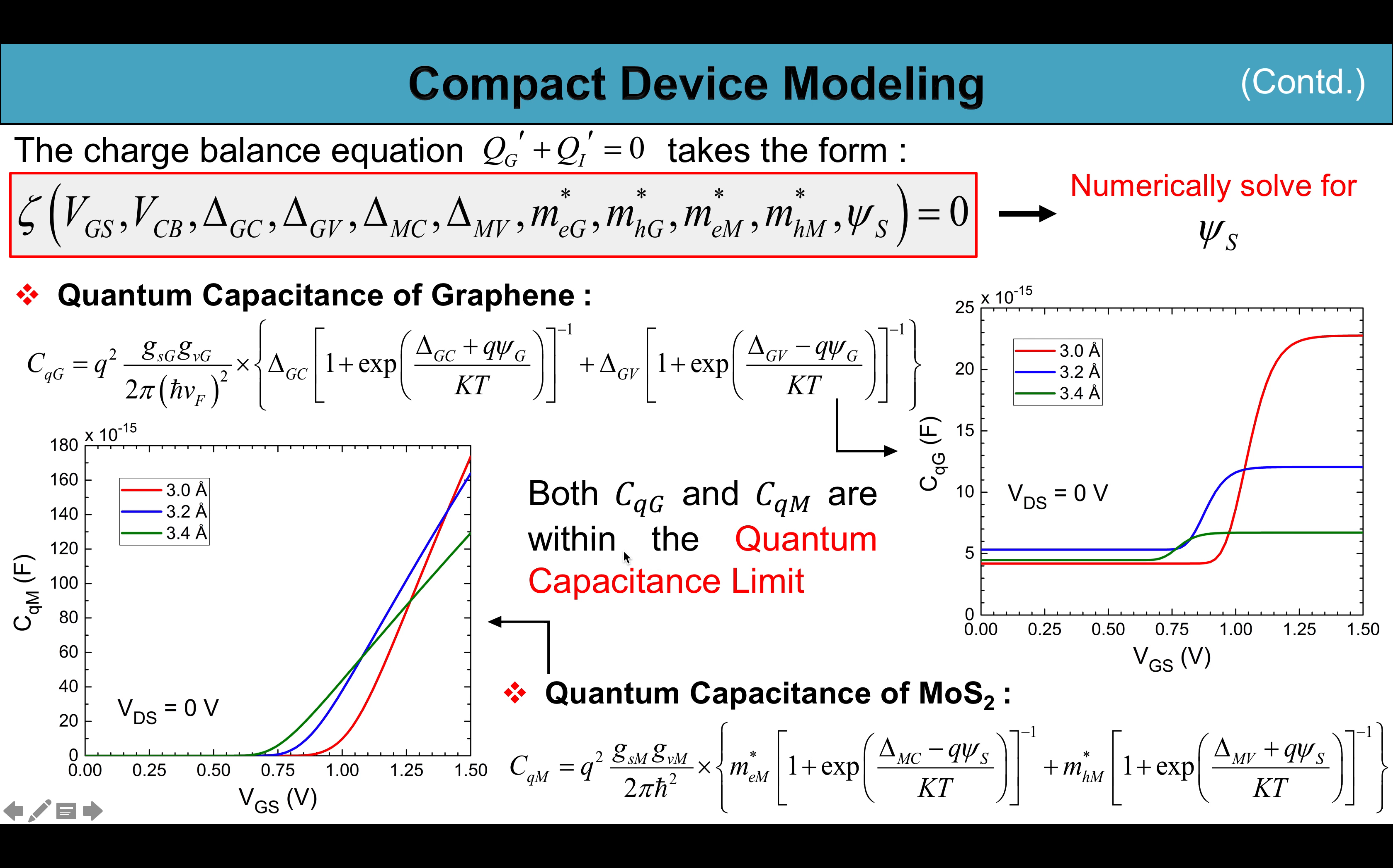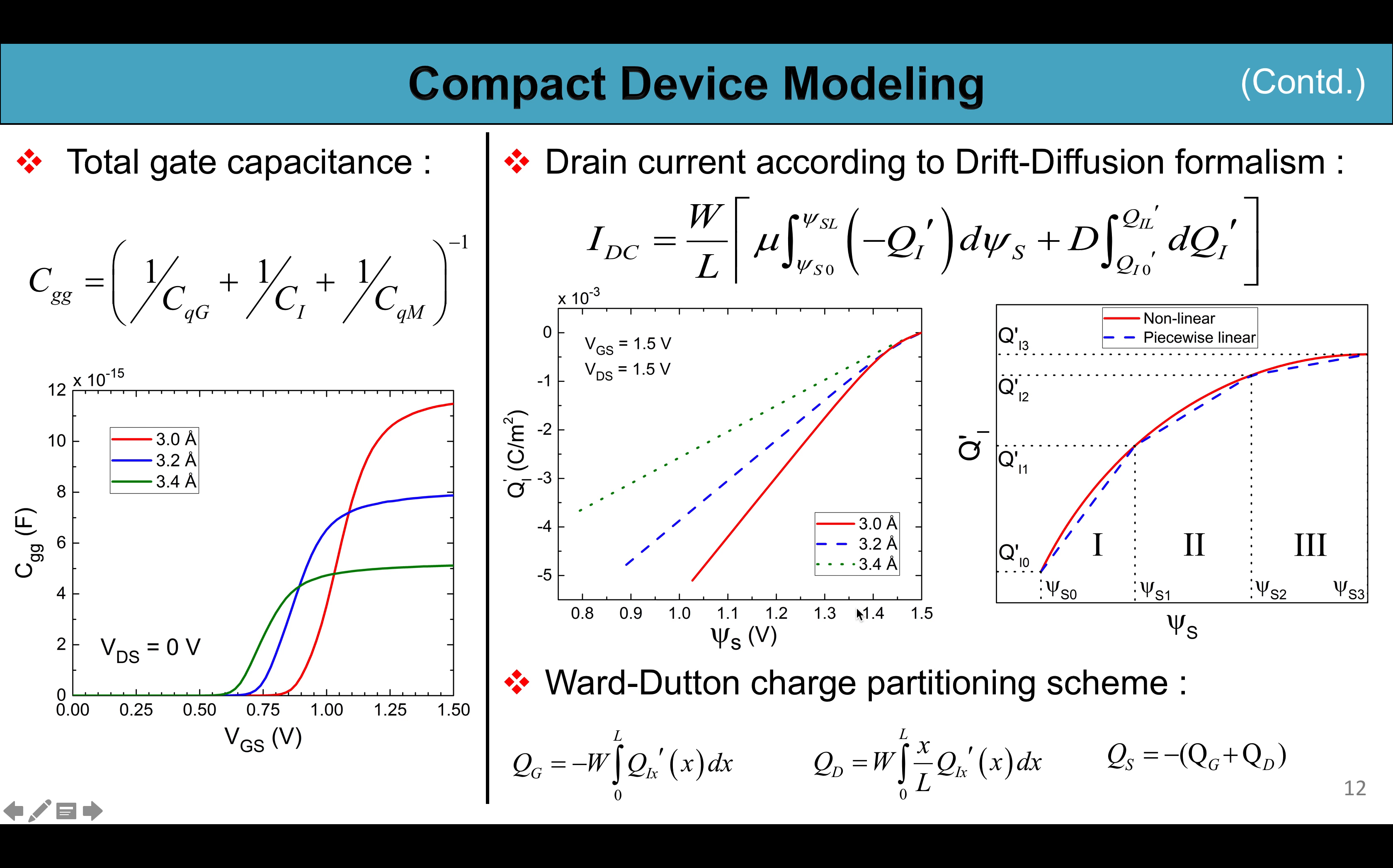Now the total gate capacitance becomes a series of the quantum capacitance of graphene, the insulator capacitance of hBN, and the quantum capacitance of MoS2, and that profile is shown in the figure.